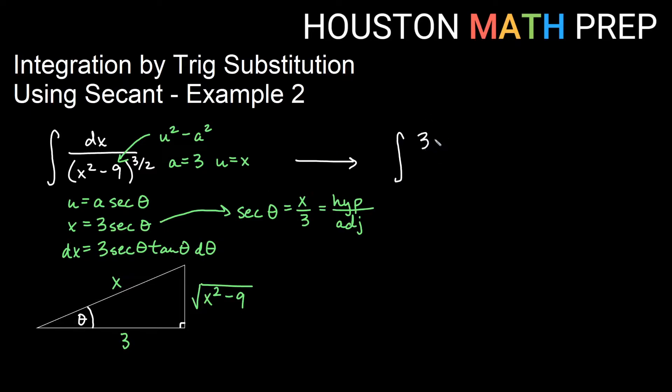So dx is 3 secant theta tan theta d theta, and the bottom I get x squared would become 9 and a secant squared theta. We'd have minus 9 that was originally there and all of that to the 3 halves. So I'll bump the 3 out. So let's say 3. We have secant theta tan theta d theta on top. That's going to be there until we get our bottom figured out here.